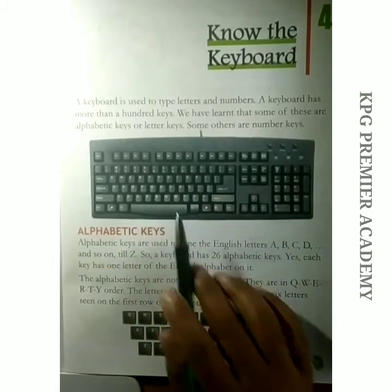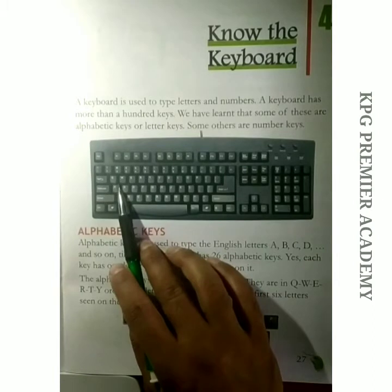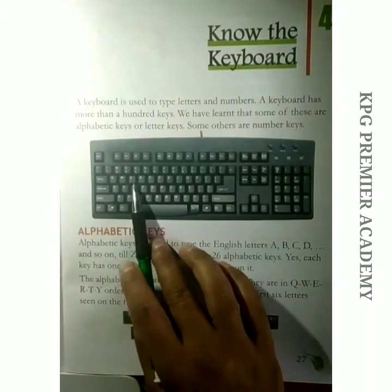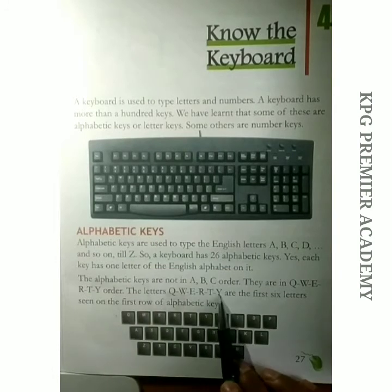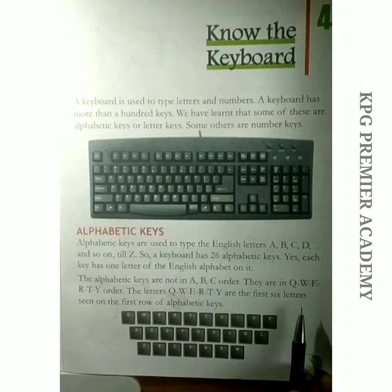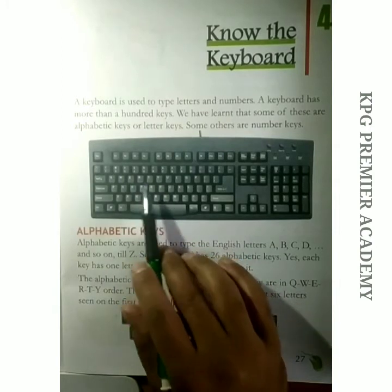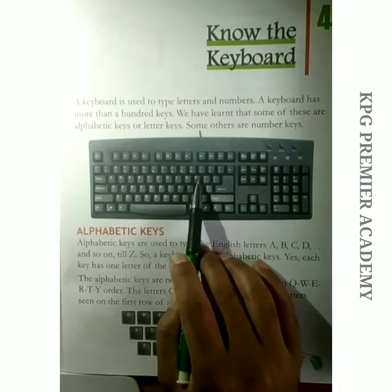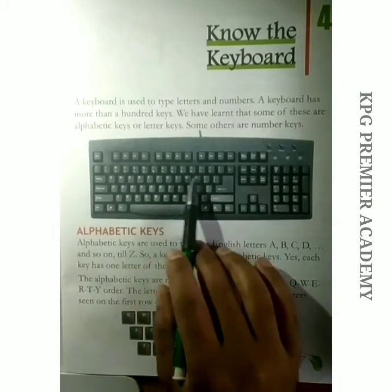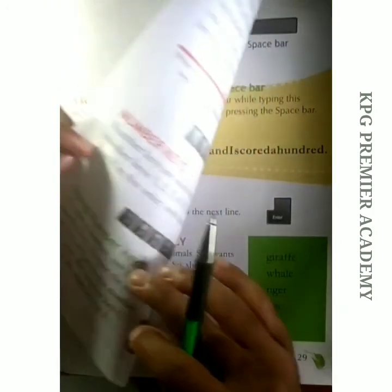The alphabetic keys are not in A, B, C order. You can see in the picture these alphabets don't start from A to Z — the first letter is Q and the last is M. The letters Q, W, E, R, T, Y are the first six letters seen on the first row of the alphabetic keys. So the first six letters on the keyboard are Q, W, E, R, T, Y — QWERTY! Then U, I, O, P continue. This is a simple way to remember the alphabetic keys on the keyboard.